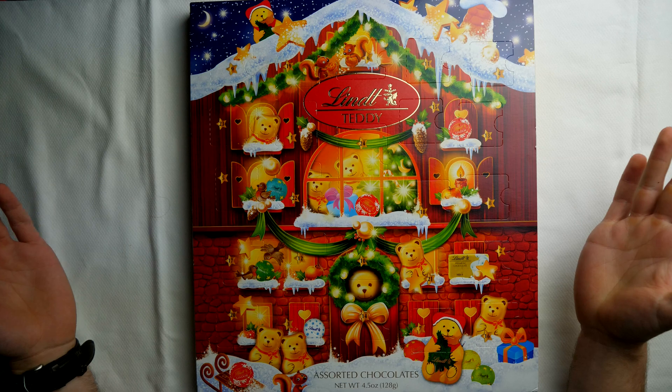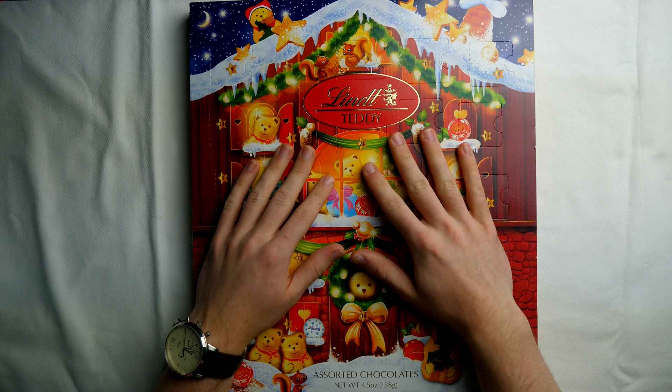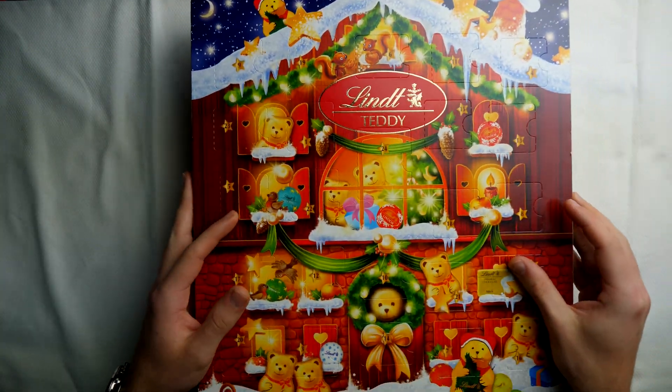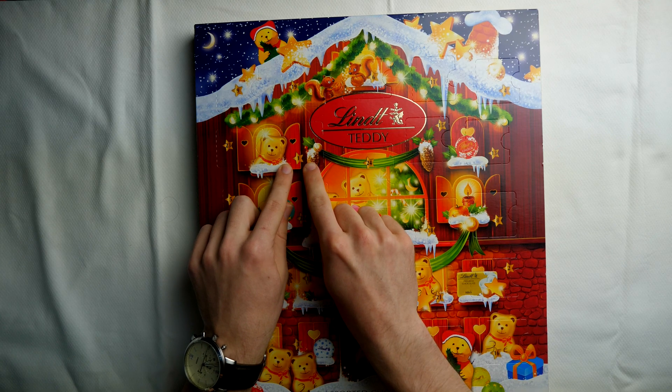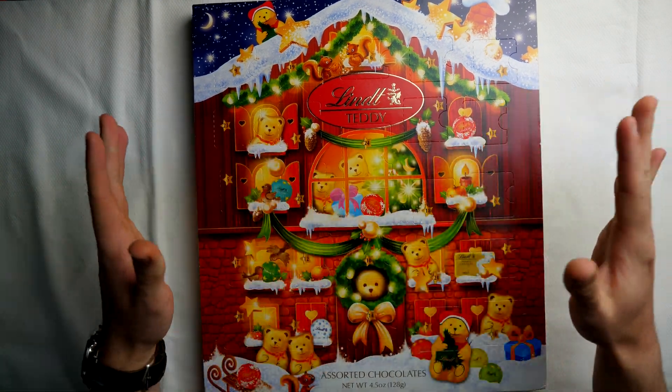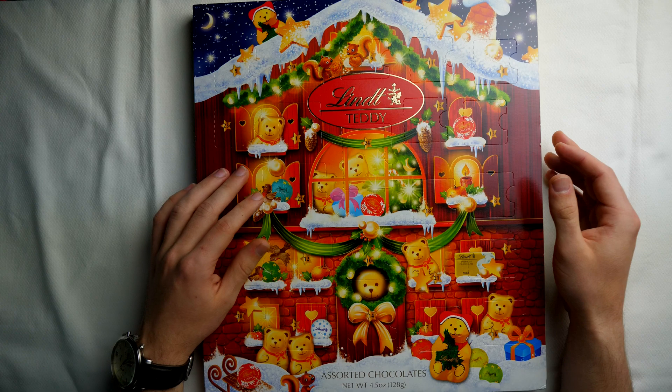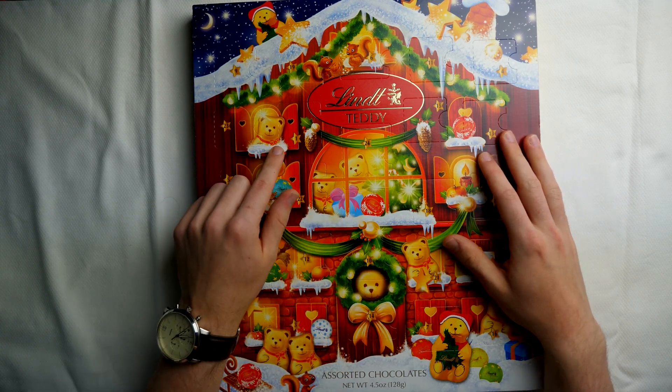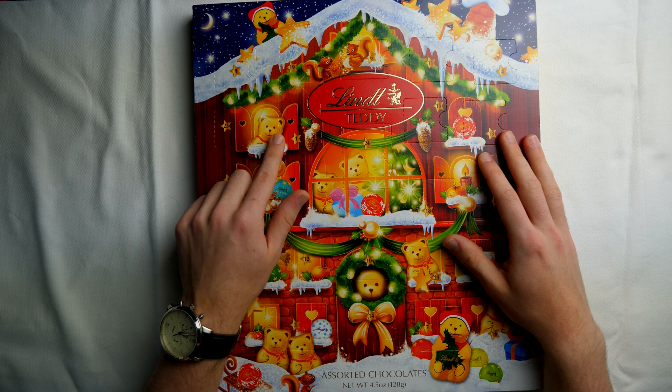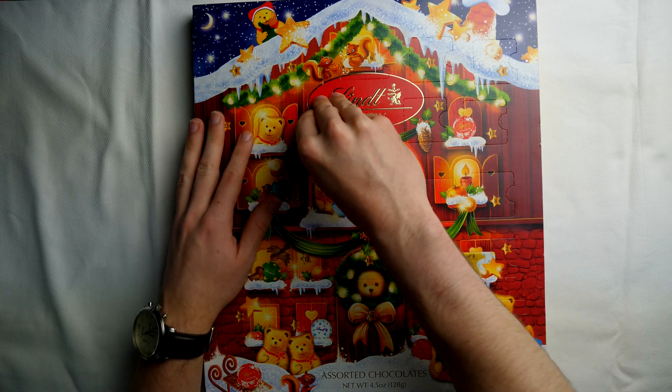Before we get into the math, let's open up the first compartment of this chocolate advent calendar. It looks like number one is right there. The numbers are just scattered all over this. There's no rhyme or reason to it. They all kind of look like jigsaw pieces. But here's number one next to the bear and the pine cone. Let's see what's in here.